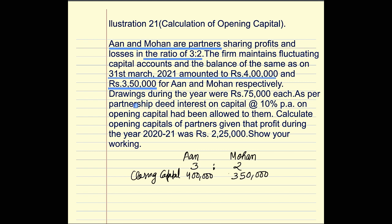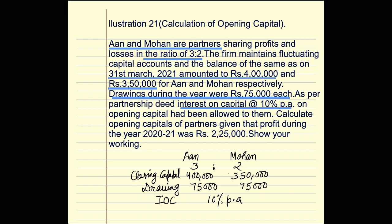During the year, drawings were 75,000 each — so drawings for Aan is 75,000 and for Mohan also 75,000. The partnership provides interest on capital at 10% per annum. Please remember that interest on capital is always calculated on opening capital.